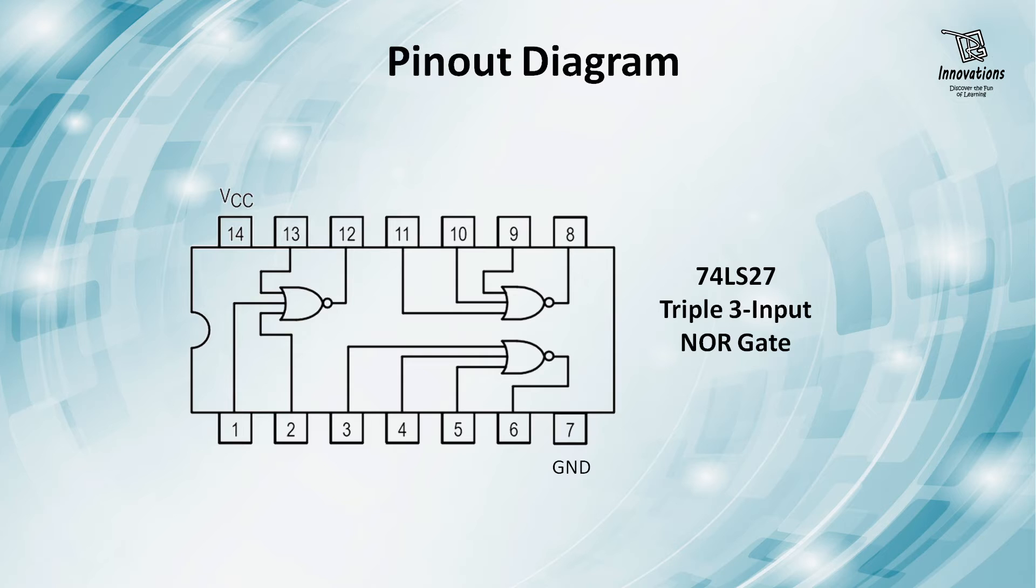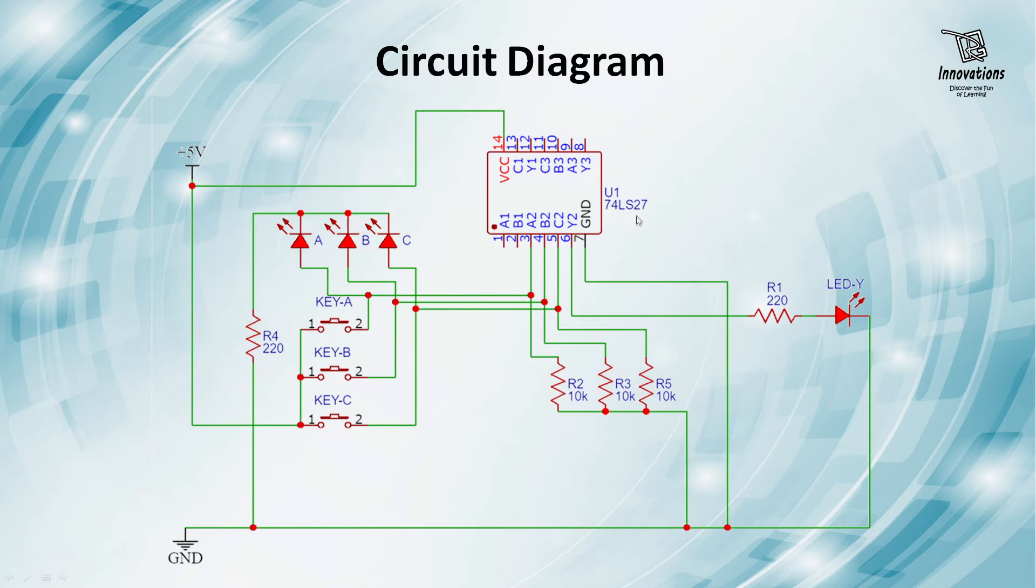Now we will have a look at the circuit diagram. This is the IC 74LS27. We are using pin number 3, 4 and 5 for input and pin number 6 for output. Input is given via these three switches: key A, key B and key C.